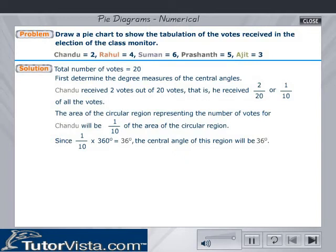Therefore, the area of the circular region representing the number of votes for Chandu will be 1 by 10 of the area of the circular region. Since 1 by 10 into 360 degrees equals 36 degrees, the central angle of this region will be 36 degrees.